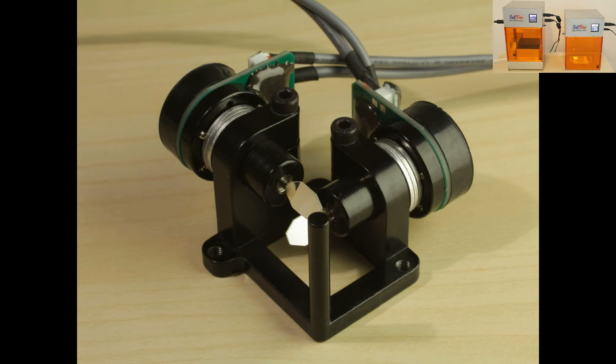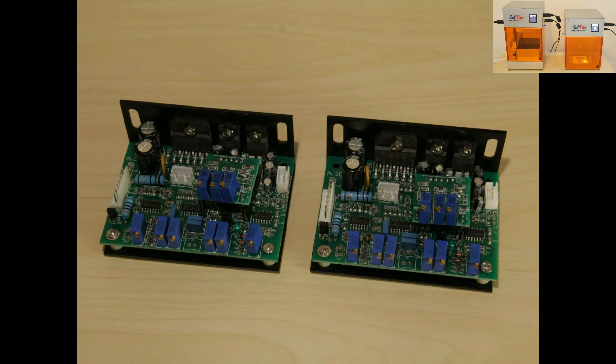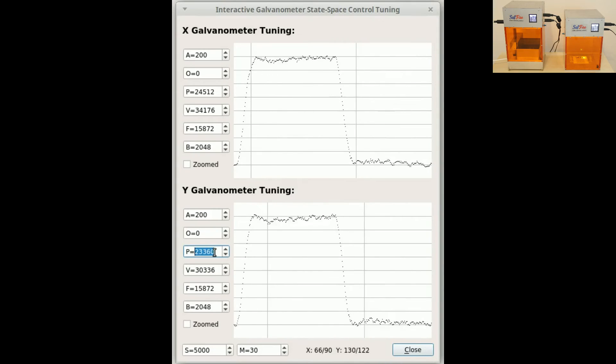However, the most significant difference between the Sapphire and other laser SLA printers lies in the control of its galvanometers. Most printers use what is called PID control, which is outdated and suffers from tracking error, and some printers even use analog PID control cards. On the contrary, the Sapphire uses what is called state space control, which would most often be found in high-end electromechanical systems such as satellites.